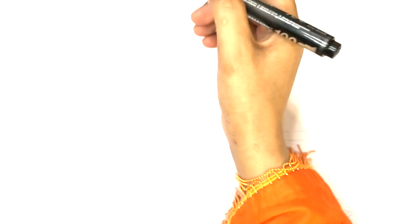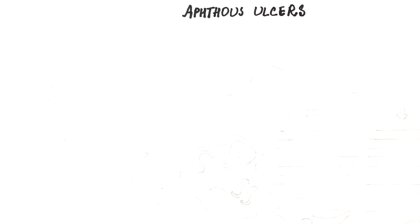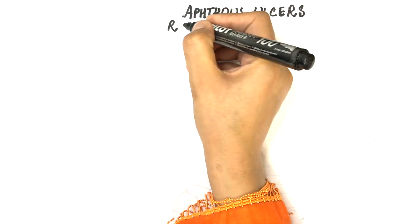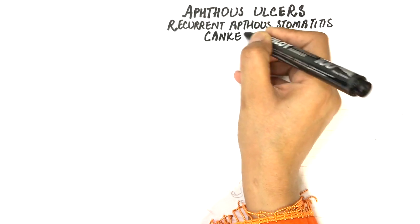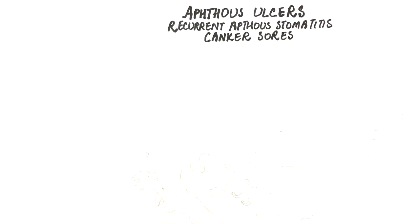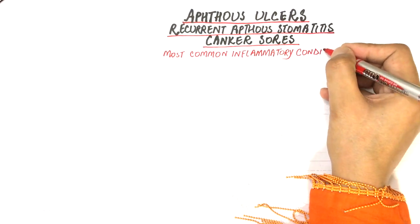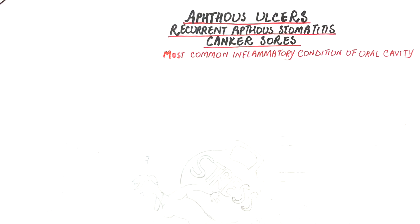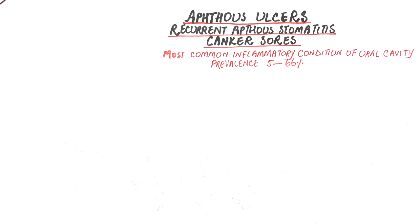Aphthous ulcers, also called recurrent aphthous stomatitis or simply known as canker sore, is a common ulcerative inflammatory condition of the oral cavity. The reported prevalence in the general population varies between 5 to 66%.